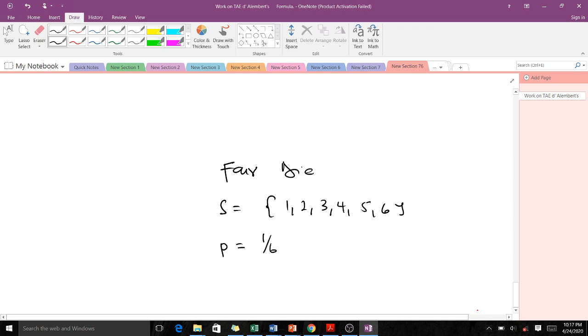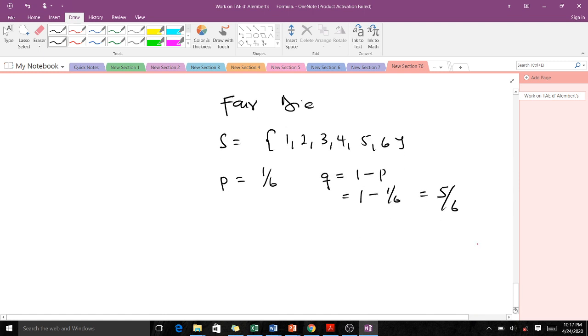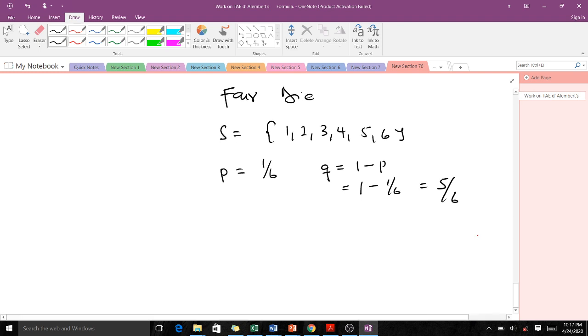Because we want 5 to occur, when 5 occurs we have succeeded. But when there is anything other than 5, that is a failure. So our q, which is 1 minus p, equals 1 minus 1/6, which equals 5/6.